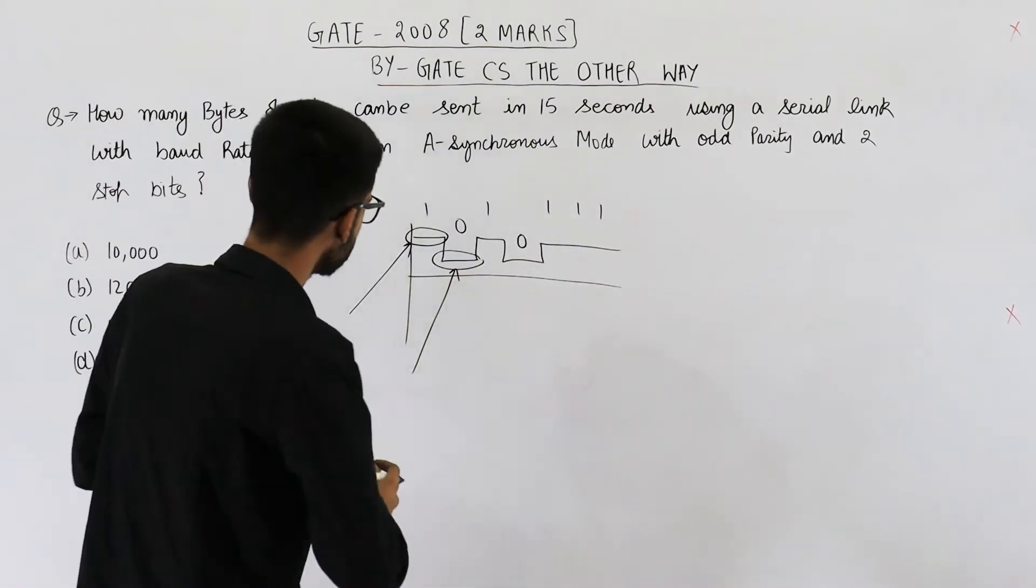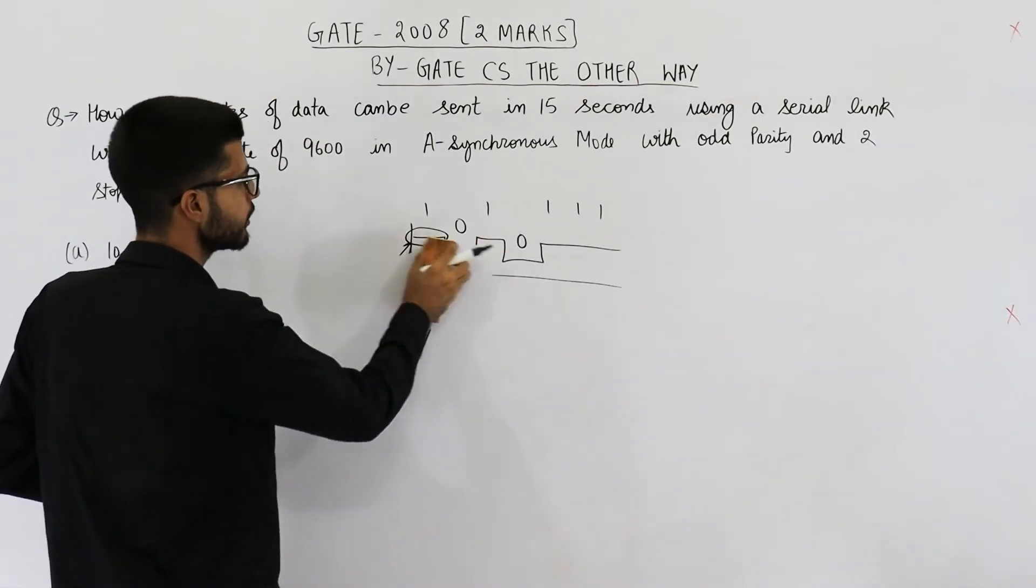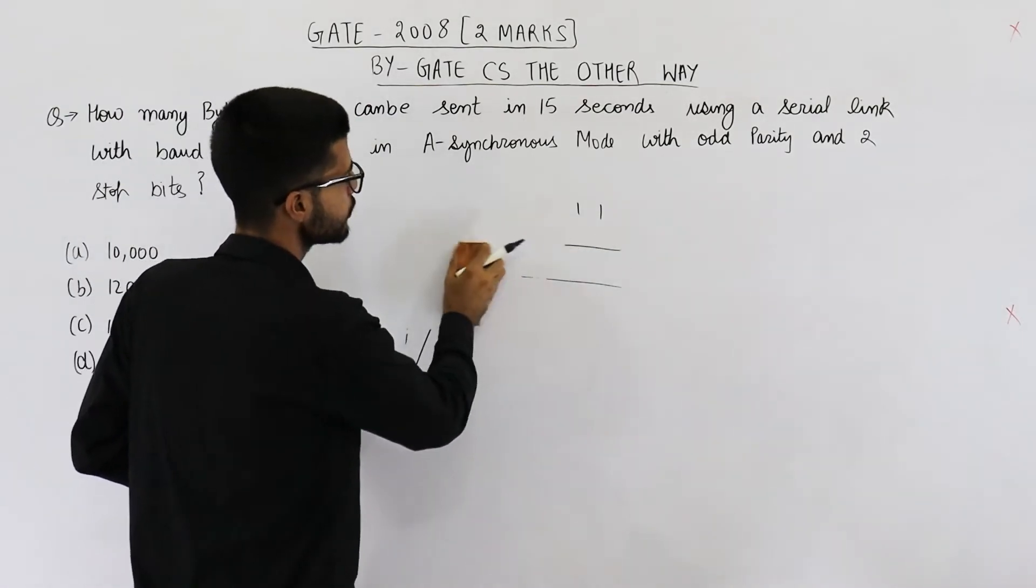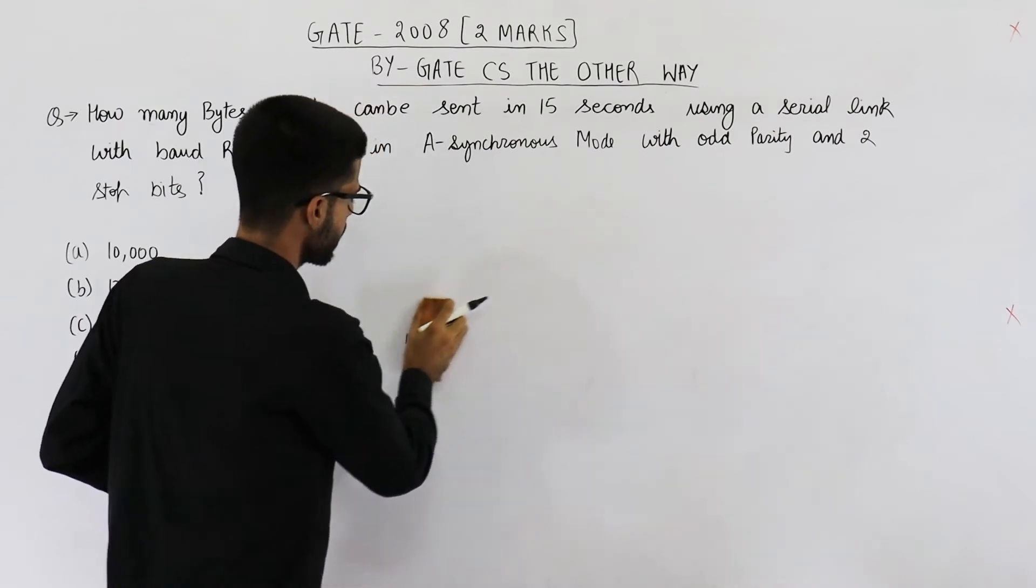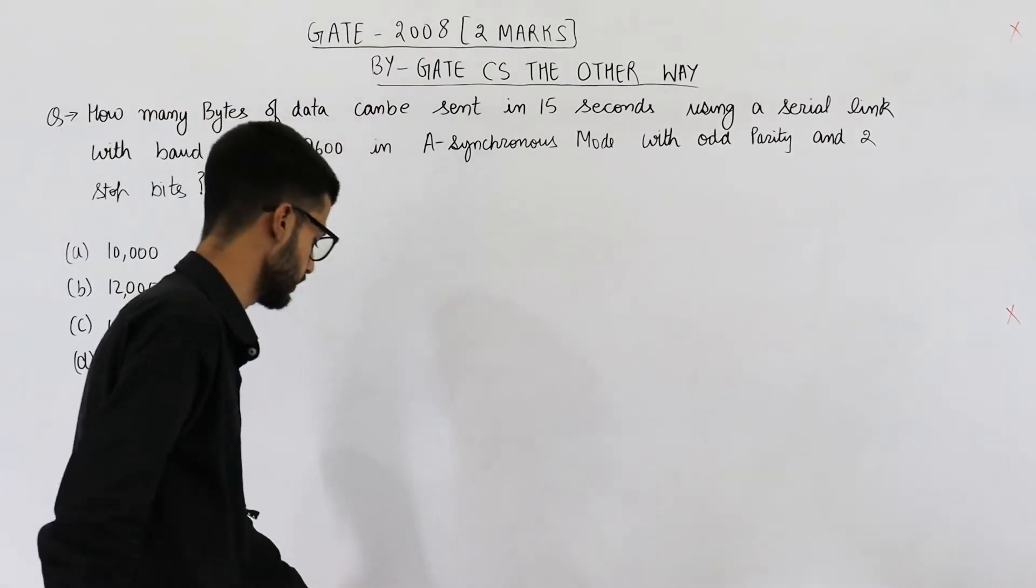So this is the first thing. That means in this question, they are simply saying transfer rate or bandwidth is 9600 bits per second. Let me write it.